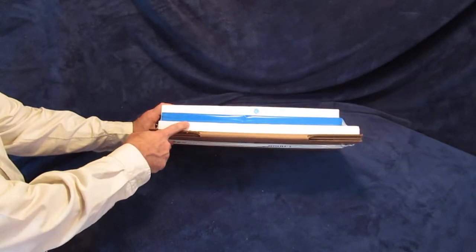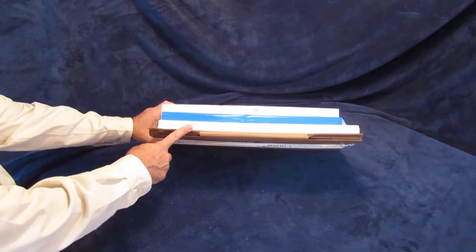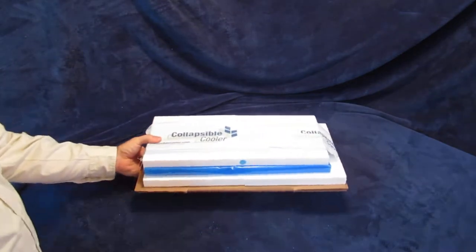Each cooler kit comes with a flattened EPS cooler and custom corrugated shipping box, but may be packaged slightly differently depending upon your order type.